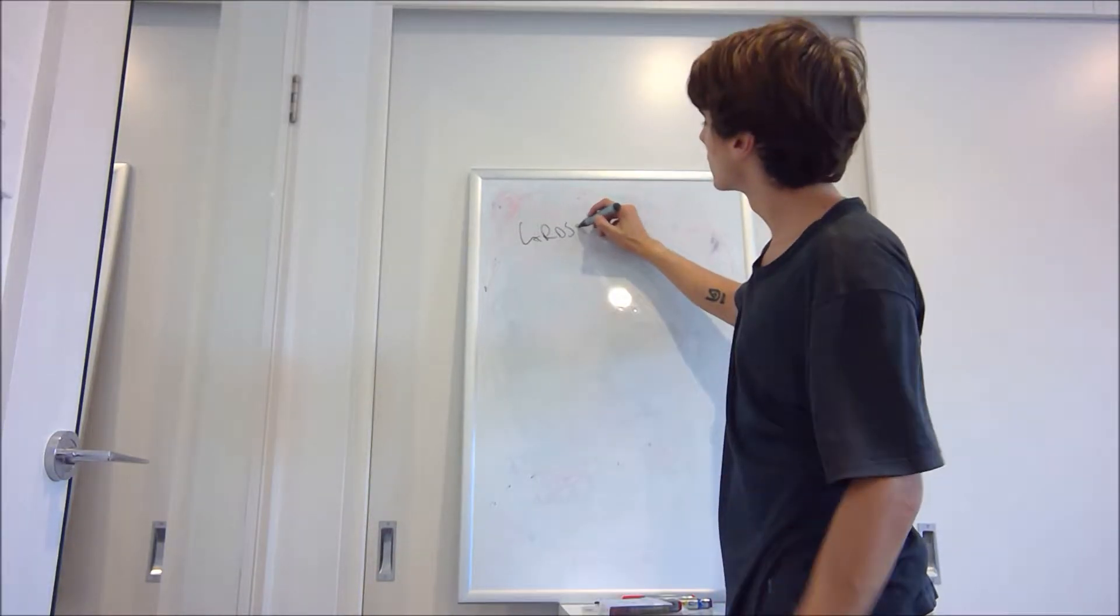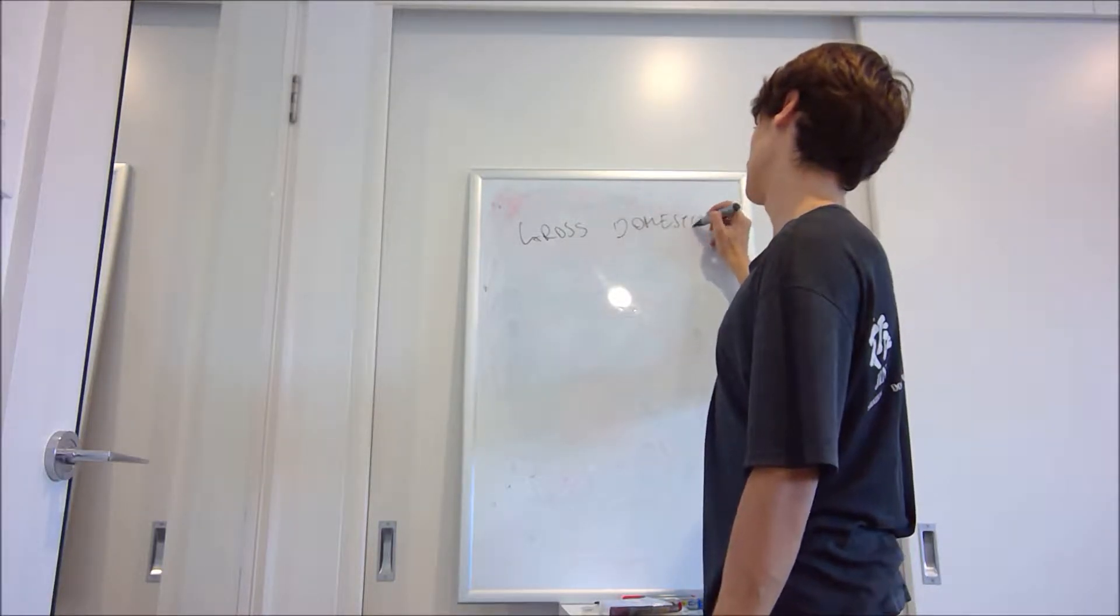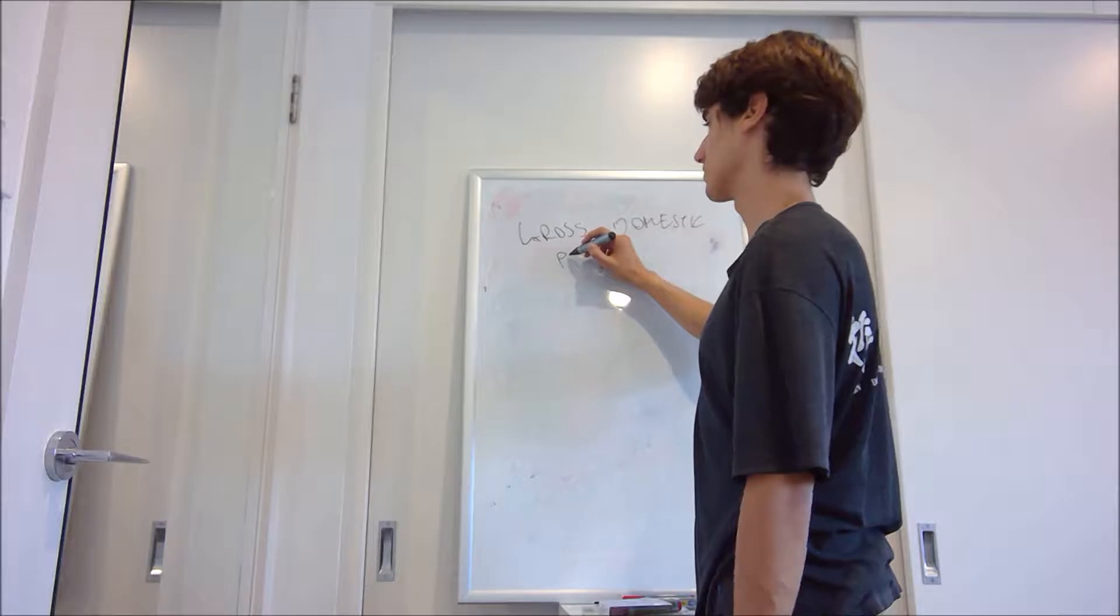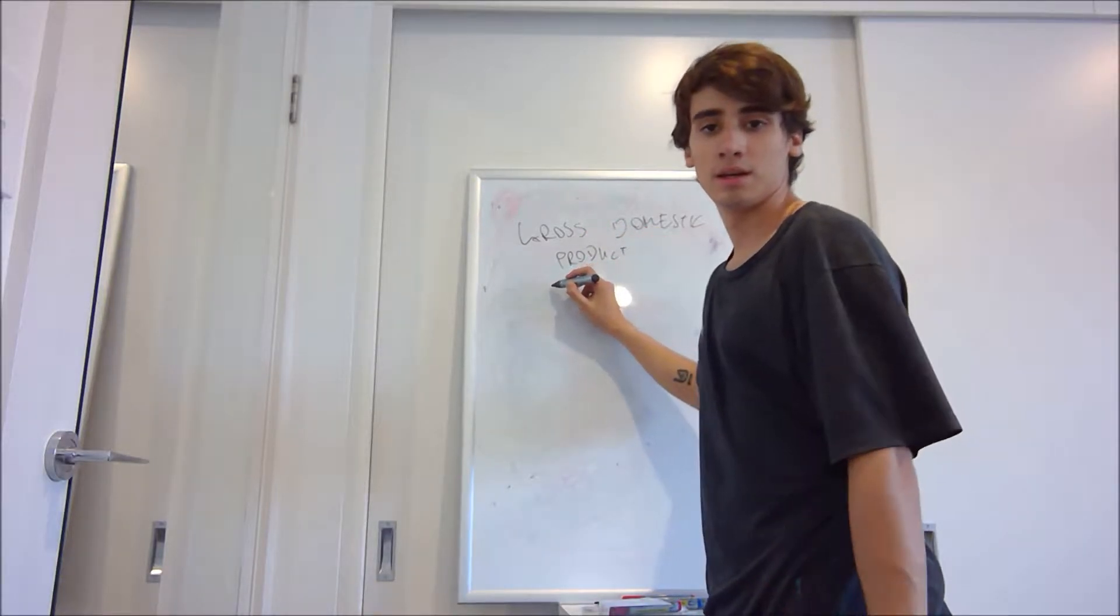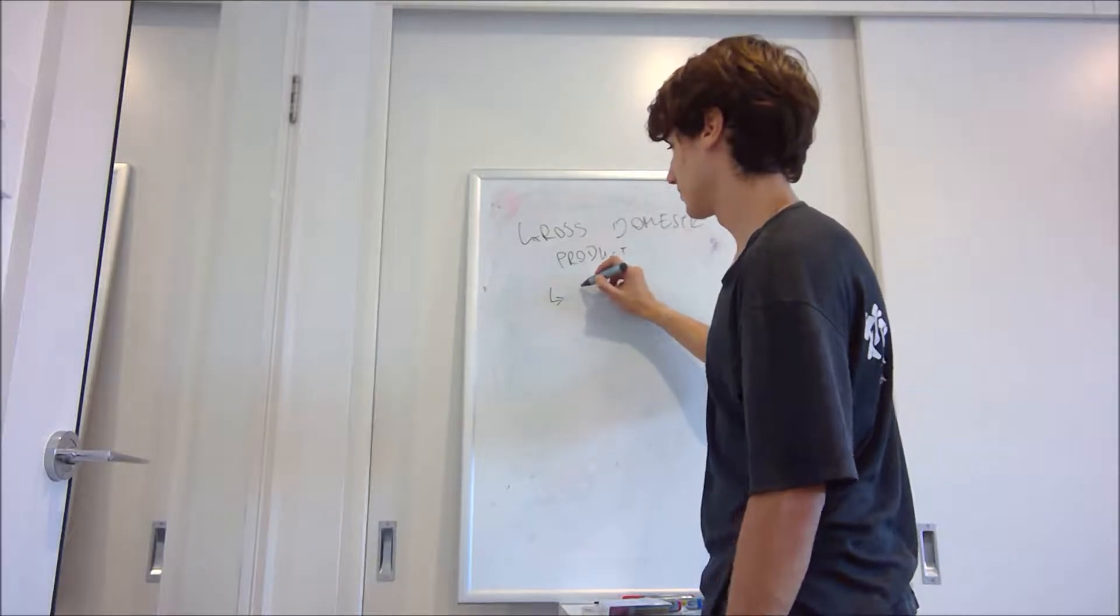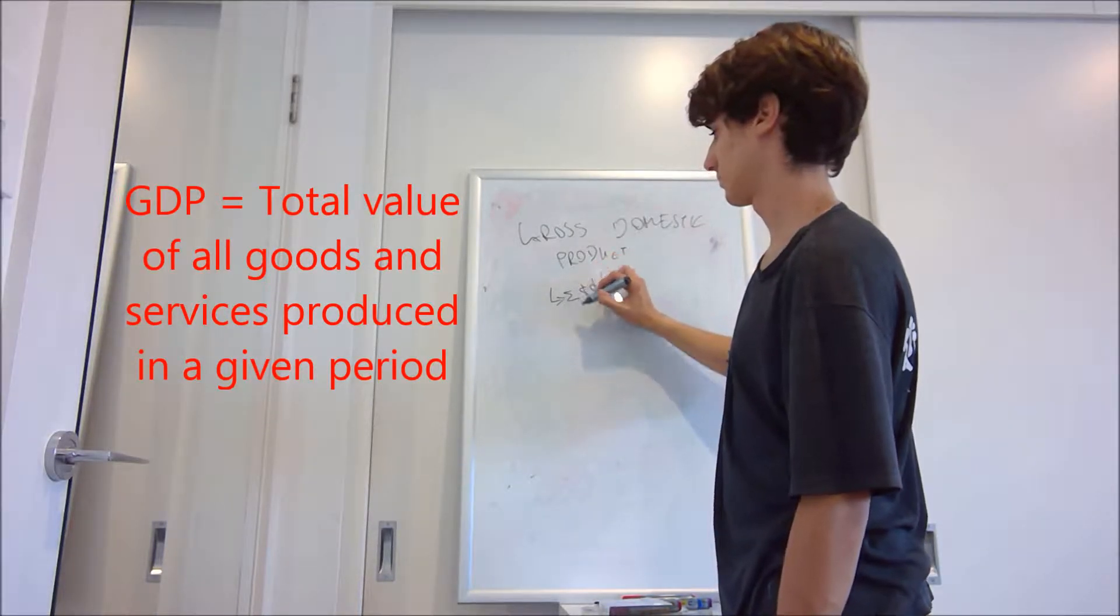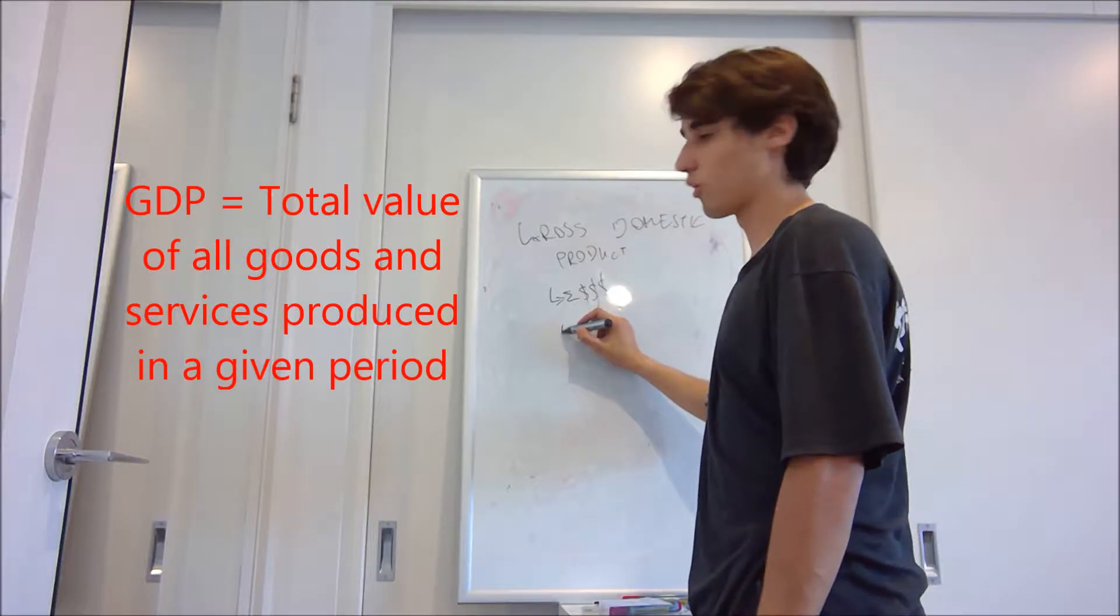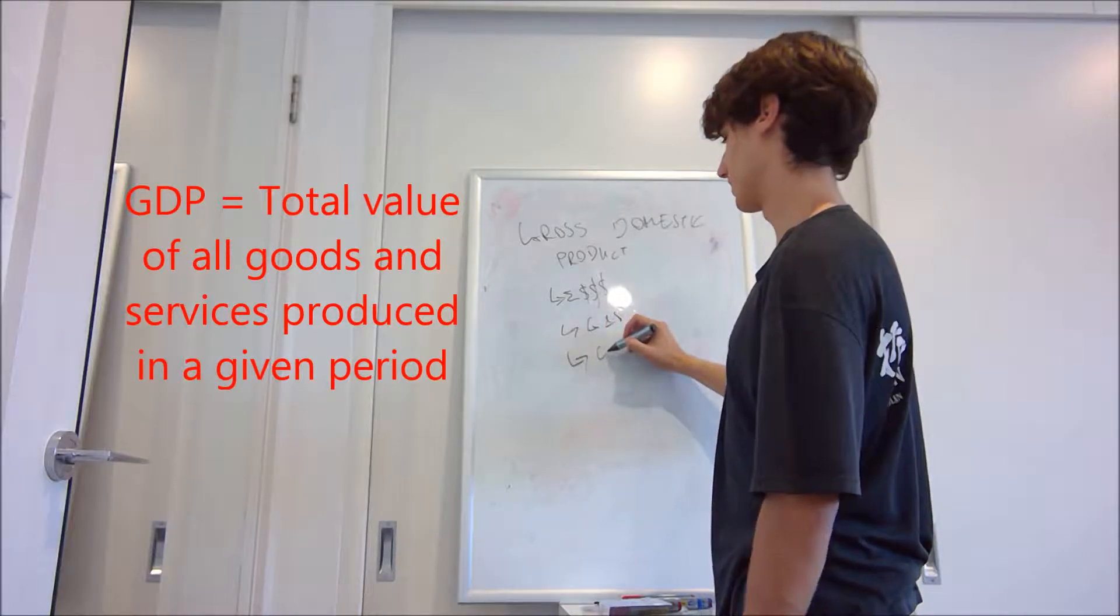What is GDP? Gross domestic product, hereby referred to as GDP, is the total market value of all goods and services produced in a given period.